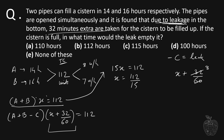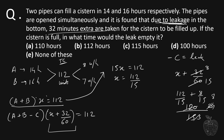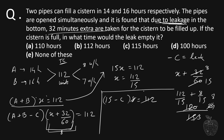X plus 32 by 60 simplifies to 112 by 15 plus 8 by 15. Taking LCM of 15, that gives us 120 by 15, which equals 8. So A plus B minus C, which is 15 minus C, multiplied by 8 equals 112. Therefore 15 minus C equals 14, and minus C equals 14 minus 15, which is minus 1. The negatives cancel, giving us C equals 1 unit per hour.